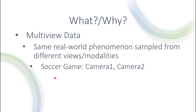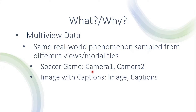Suppose we have a soccer game and there's a player, and there are two different cameras that are focused on this player. So we have different sources, different views of the same player, which is the real-world phenomenon. Another example could be if we have a dataset that has both images and captions — so the image is one view and the caption, the text, is another view.